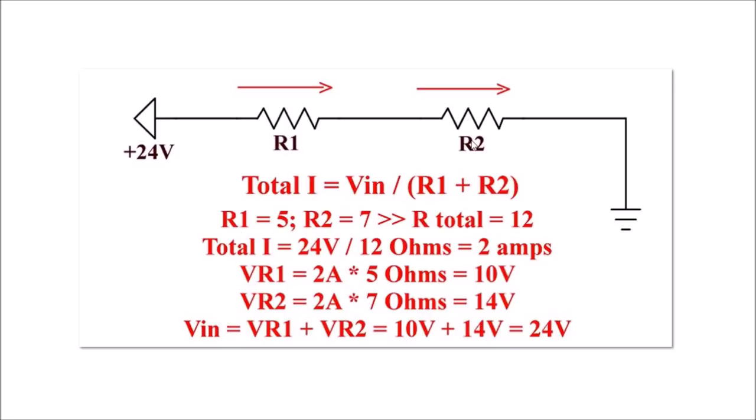Keep this in mind. This second example, I've set R1 to 5 ohms and R2 to 7 ohms, giving me a total resistance of 12 ohms. Divide 12 ohms into 24 volts - that's 2 amps. The voltage across R1 is 2 amps times 5 ohms equals 10 volts, and the voltage across R2 is 2 amps times 7 ohms equals 14 volts.